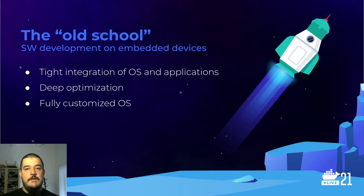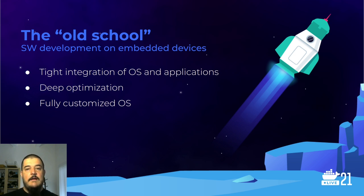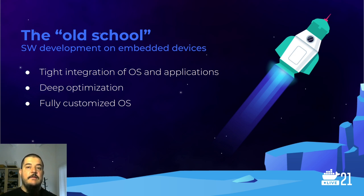Traditionally in embedded development, the idea is to have tight integration between the operating system and the applications. Tools like Yocto, OpenEmbedded, BuildRoot, and PTXDIST allow you to build a system image that integrates very heavily all the OS components, libraries, and the application itself. At the end you have a fully customized system that is deeply optimized for your specific hardware and use scenario.